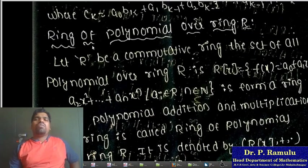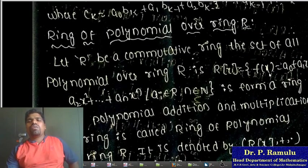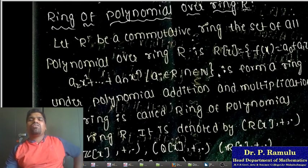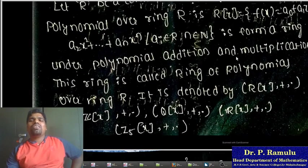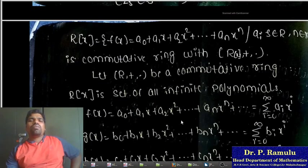Ring of polynomials over ring R: Let R be a commutative ring. The set of all polynomials R[x] = {f(x) = a_0 + a_1 x + a_2 x^2 + ... + a_n x^n : a_i belongs to R, n belongs to N} forms a ring under addition and multiplication. This ring is called the ring of polynomials over ring R, denoted R[x]. Here n belongs to N, so it is an infinite polynomial form.